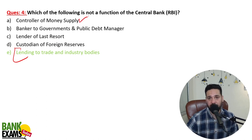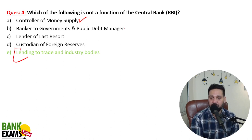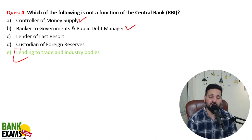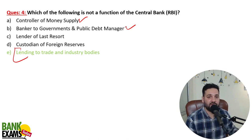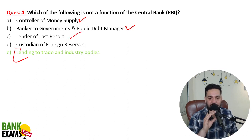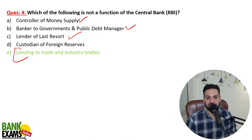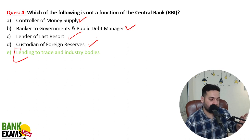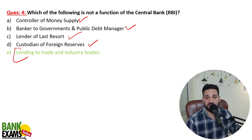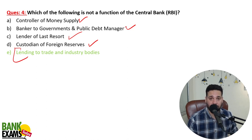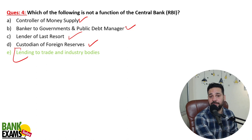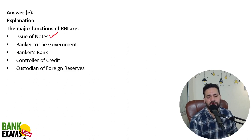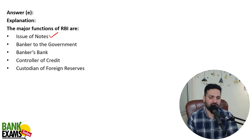The RBI controls money supply by making changes to repo rate and reverse repo rate. It is the banker to the government and public debt manager, helping the government raise money via sovereign gold bonds, sovereign green bonds, and T-bills. It acts as lender of last resort if the government is unable to find funds. The forex reserves of the country are held by the Reserve Bank of India. These four are functions of RBI. RBI also issues notes — currency management is also a function. Lending to trade and industrial bodies is NOT a function of RBI.